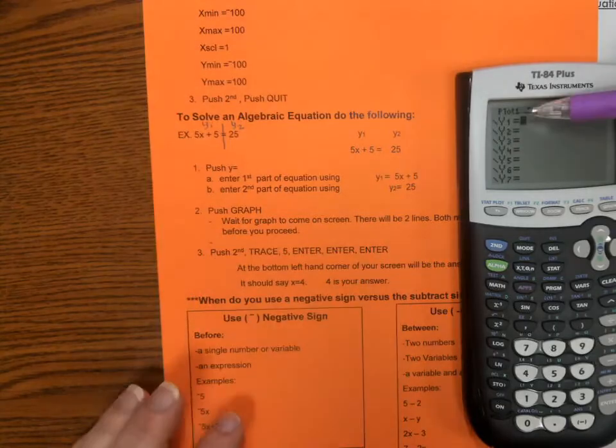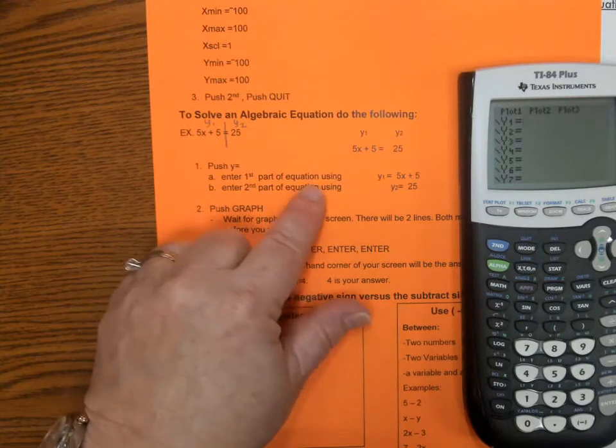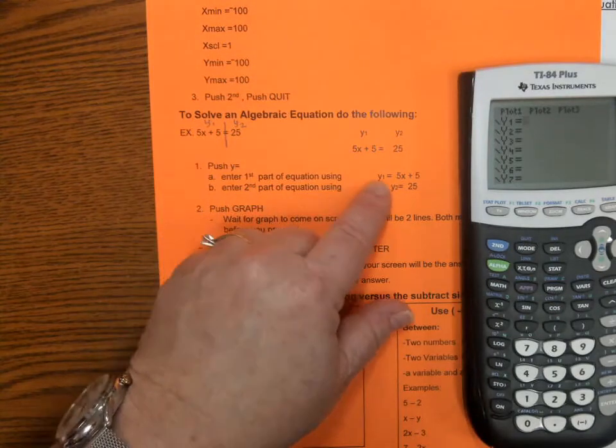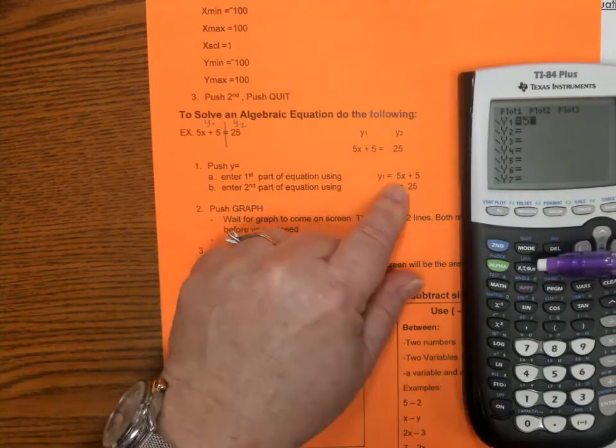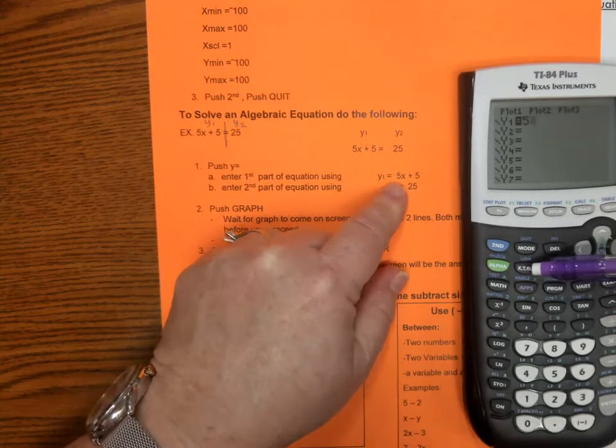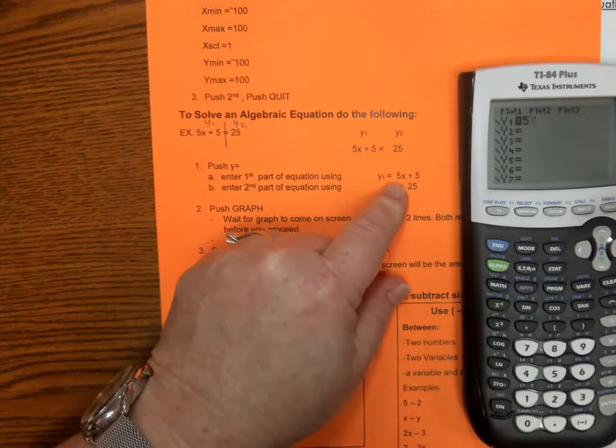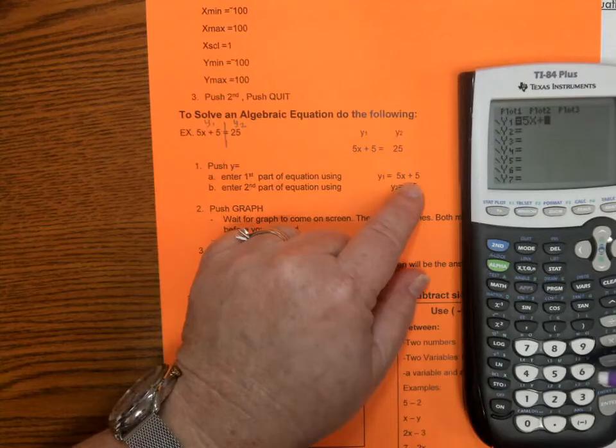So, push Y equals. Enter the first part of the equation using Y1 is equal to, I'm going to enter 5. You have to use this right here as your variable. It doesn't matter if it's X, Y, Z, B, C, whatever it is. You push that. Then it says plus, and then 5. So, I have 5X plus 5.